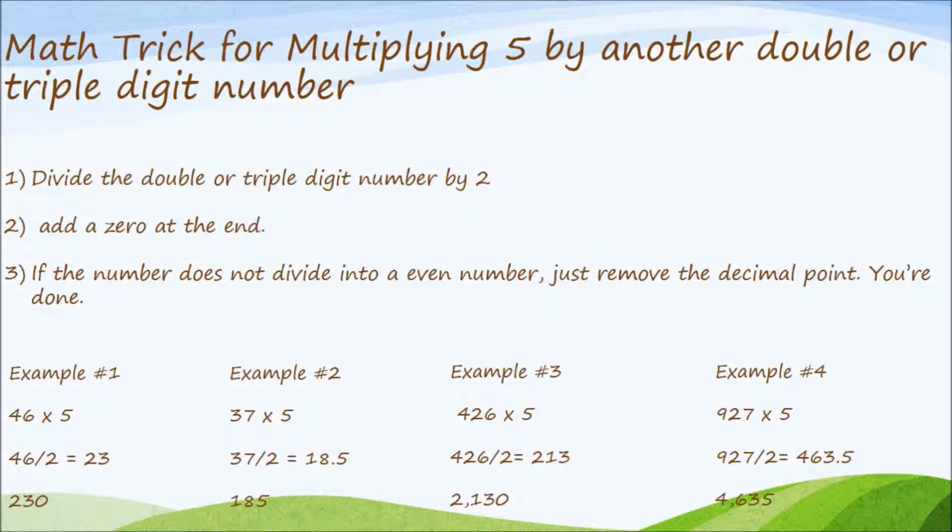Third example. We have 426 times 5. We're going to divide 426 by 2, which is equal to 213. Now we're going to add a 0 at the end. Final answer, 2130.